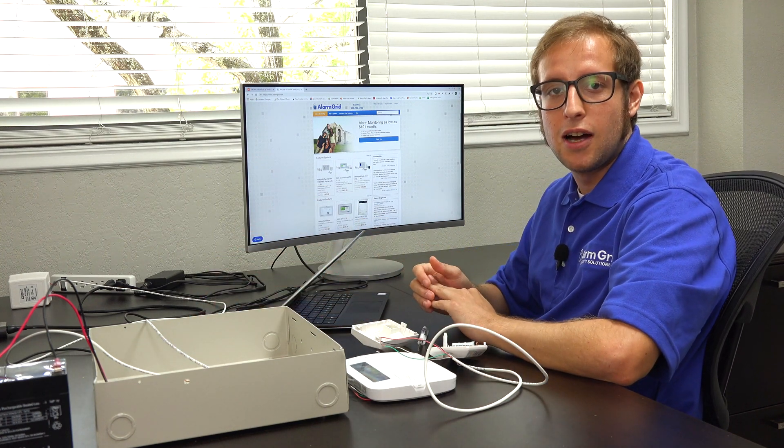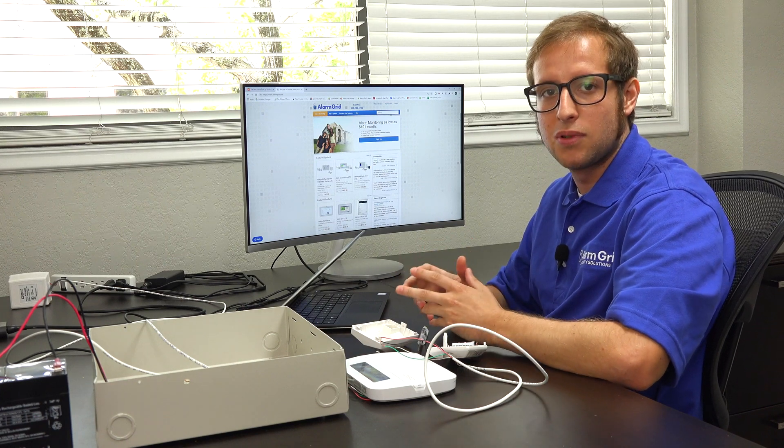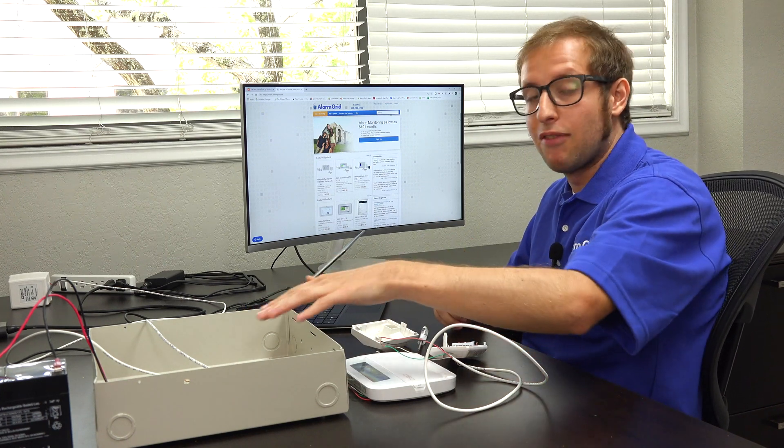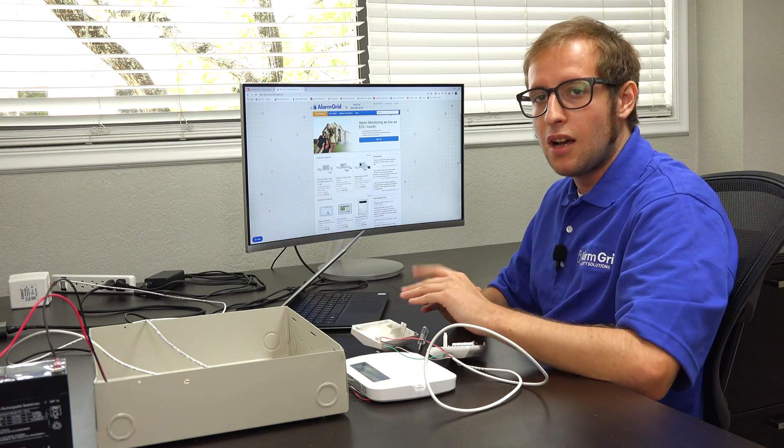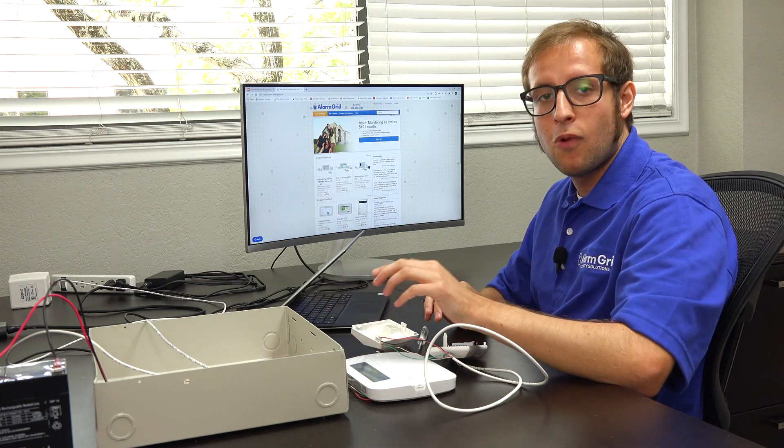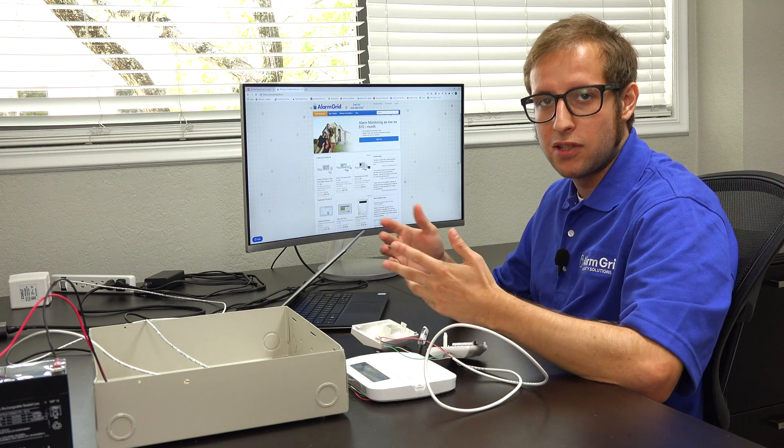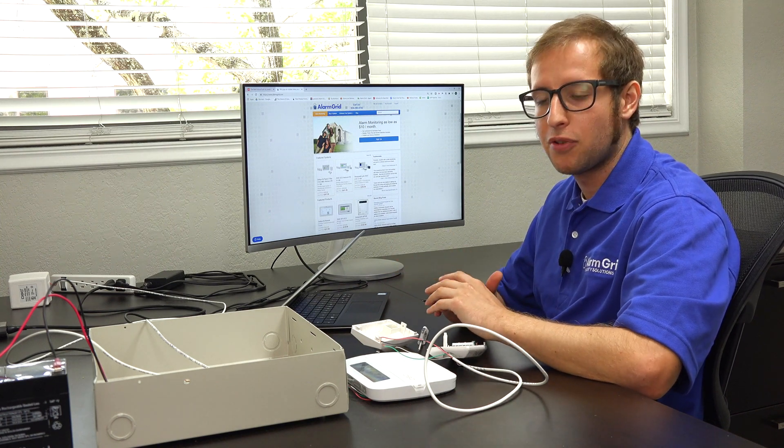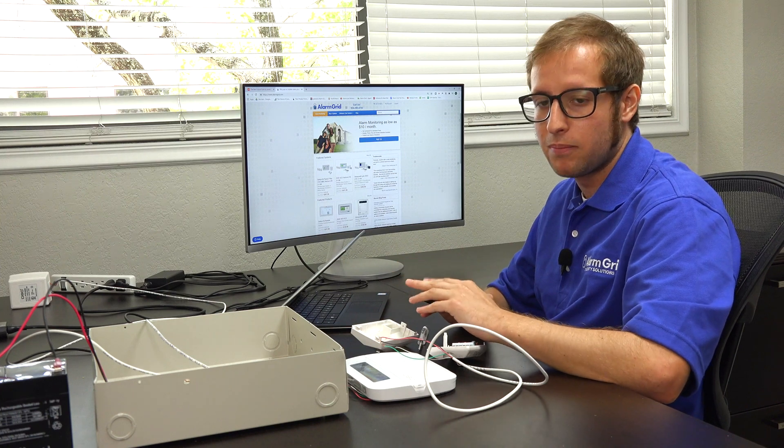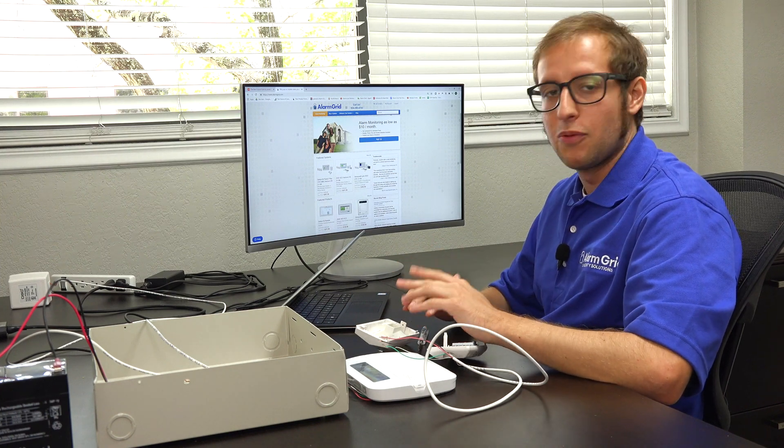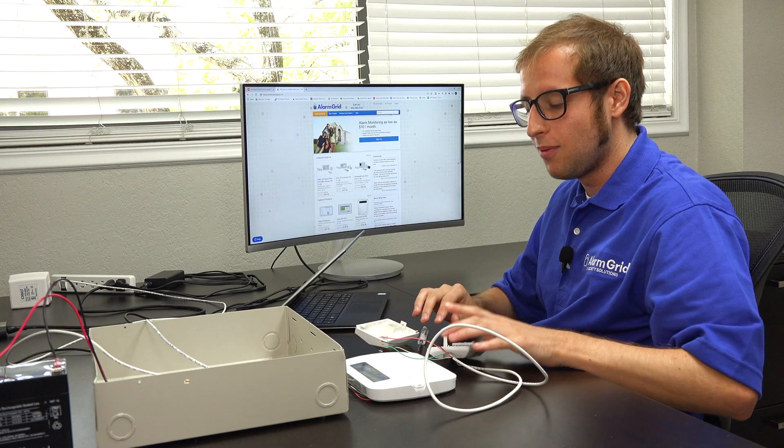Each zone is set up with an end-of-line resistor that tells it that the zone is closed. So you need to have those at each zone, even if there is a zone that you're not using with the system. If you need to go beyond eight wired zones, then you can get a zone expansion module to add additional zones. But in our case, we're just adding one zone at zone number one, so we don't need that expansion module.